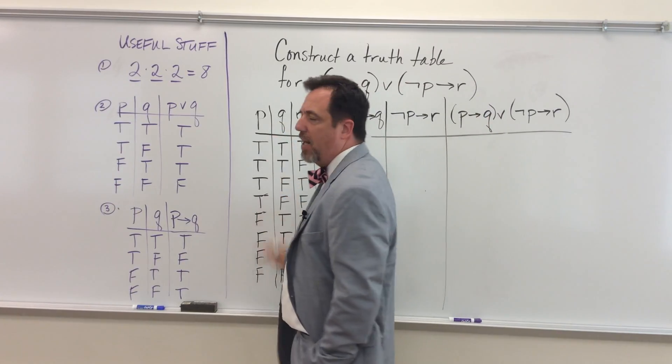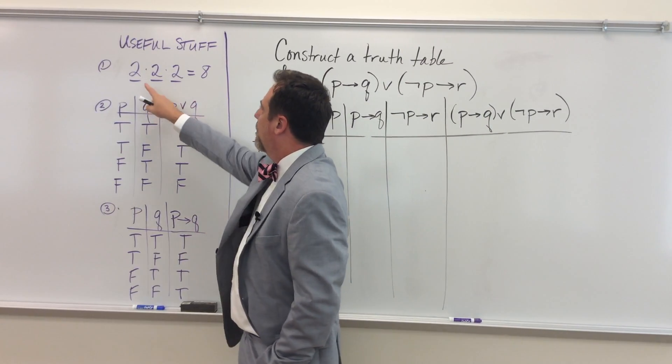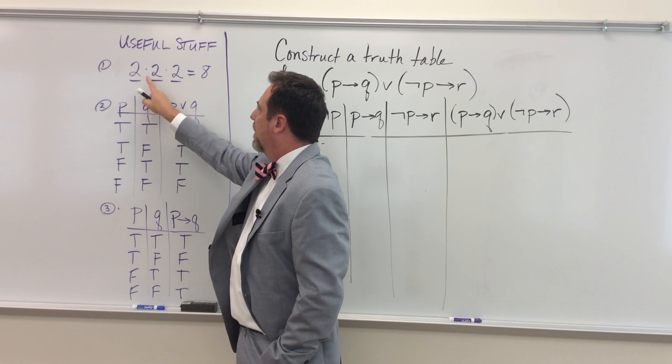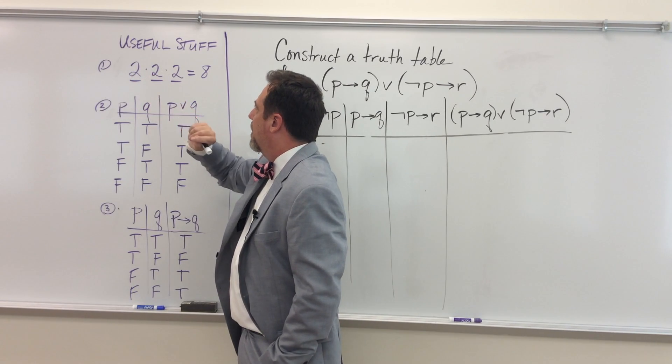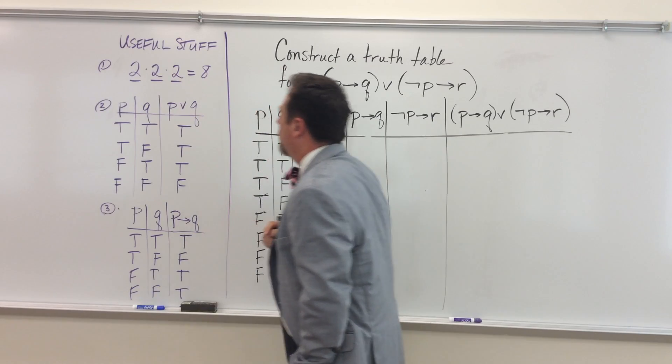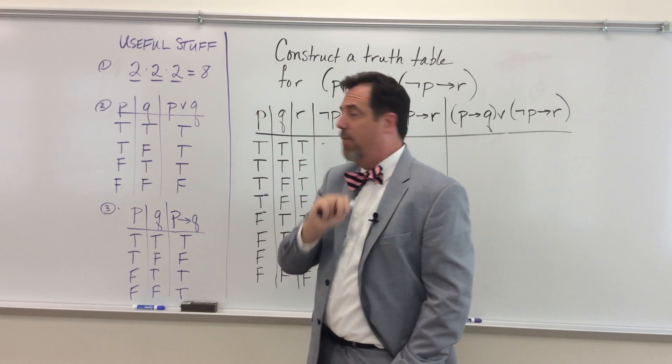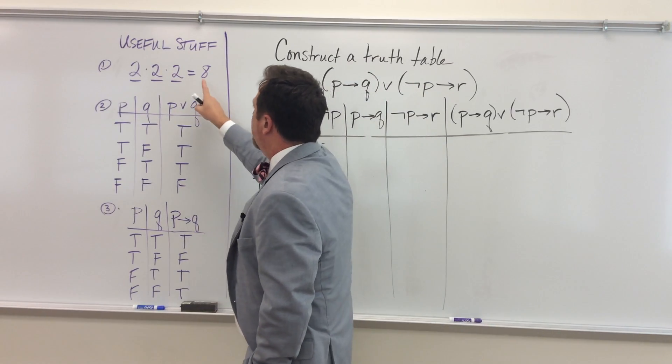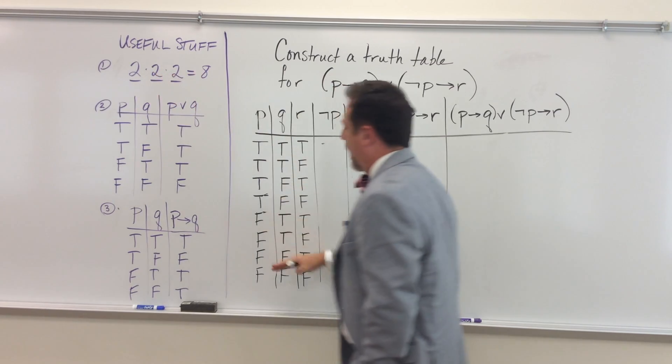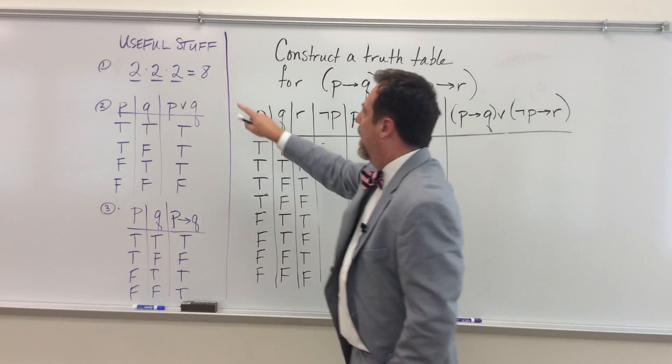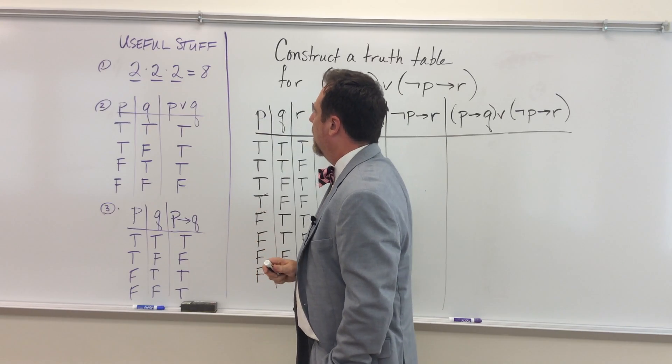There's an easy way to figure out how many you're going to get using the fundamental counting principle. For P, I have two possibilities. For Q, I have two possibilities. And for R, I have two possibilities, always true or false. And all I have to do is multiply those together to get eight. That way I know there are eight permutations. And that's a little application of the fundamental counting principle.